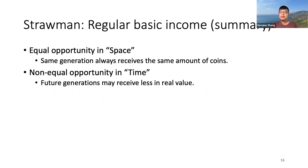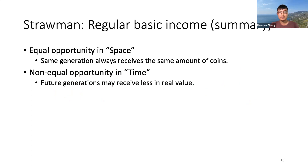To summarize: this simple monetary policy provides equal opportunity for the same generation because they will always receive the same amount of basic income — we call this property equal opportunity in space. However, future generations may receive less in real value due to the inflation effect, so it does not provide equal opportunity in time.